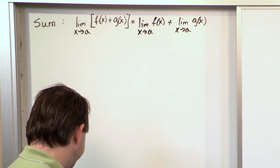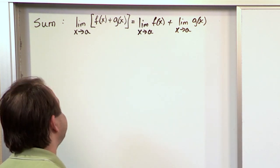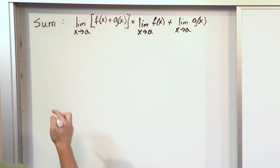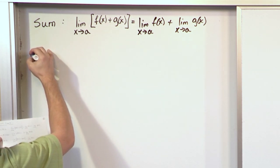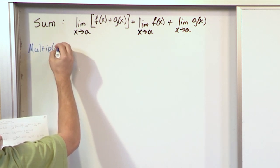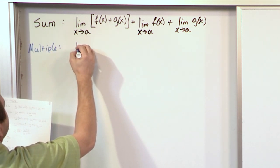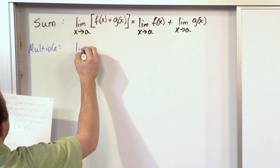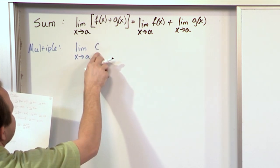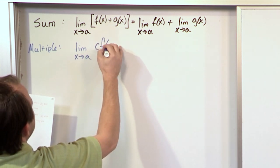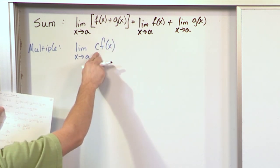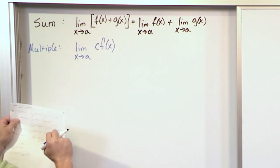But it's a formal limit law, so we're going to write it down — you may be asked to list these things on a test or something. We have another one called the multiple rule. If I have the limit as x approaches a of some number c — c is a number — times f of x. So this could be 5 times a function or negative 3 times a function. c is just a constant, that's why we call it c.